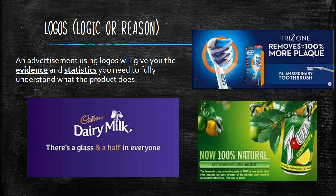The next one is logos, which looks at logic or reason. An advertisement using logos will give you the evidence and statistics that you need to fully understand what the product does. Here in the top right corner is an Oral B toothbrush called the Trizone — it removes up to 100% more plaque versus an ordinary toothbrush. And even the color of the ordinary toothbrush is gray and looks quite miserable. If you had to pick which toothbrush to buy, you'd be wanting this Oral B fancy-looking one. They've used this statistic to say: look, it works, it removes up to 100% more — it's logical, buy it.